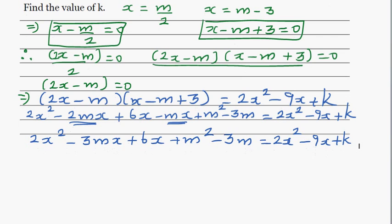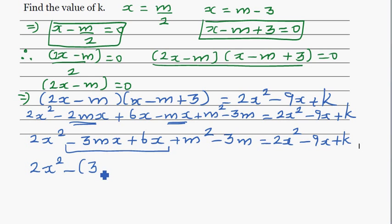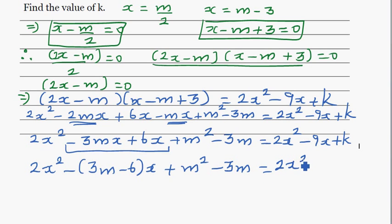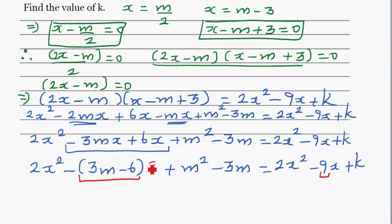So we have 2x squared minus 3mx plus 6x plus m squared minus 3m equals 2x squared minus 9x plus k. We can factor this as 2x squared minus (3m minus 6)x plus m squared minus 3m equals 2x squared minus 9x plus k. Comparing the left-hand side with the right-hand side, the coefficient of x tells us 3m minus 6 should equal 9. We can compare the x terms with the x terms.